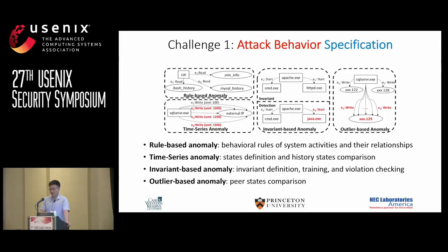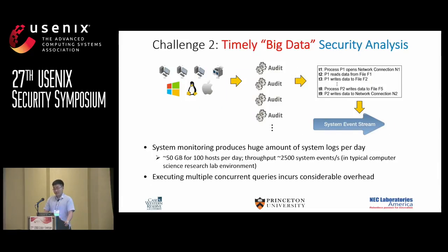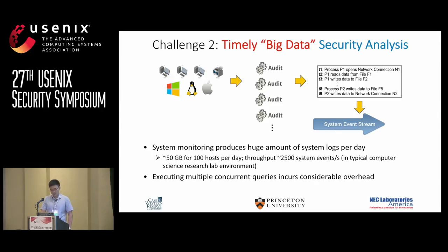Building such a system requires us to solve two major challenges. First, the system must provide an expressive and concise interface to express a broad set of abnormal behaviors, including both rule-based behaviors and advanced anomaly behaviors. Second, system monitoring produces huge amounts of daily logs — for example, in a typical lab environment of 100 hosts, around 50 gigabytes with throughput around 2,500 events per second. The streaming scenario may also introduce multiple concurrent queries in execution, which can incur considerable overhead. Building a system that enables real-time analytics over this large-scale stream data is quite challenging.